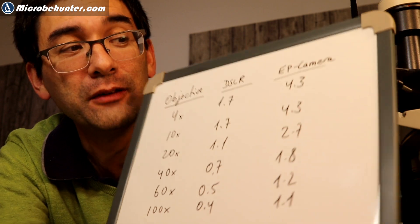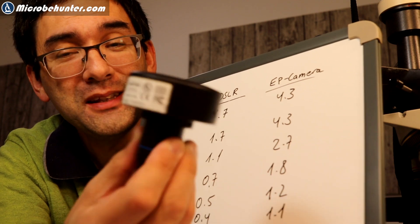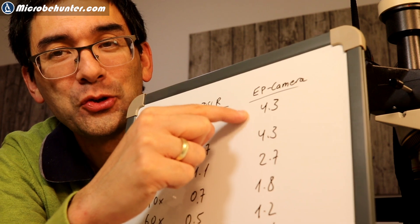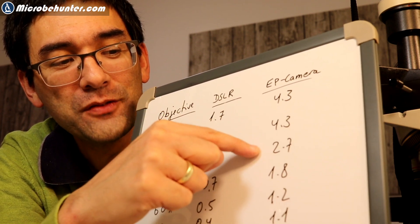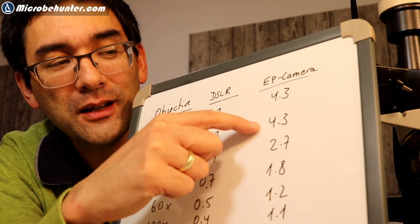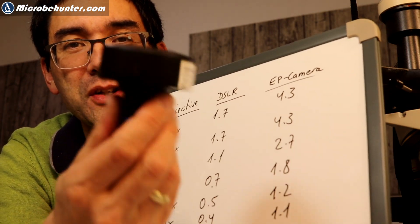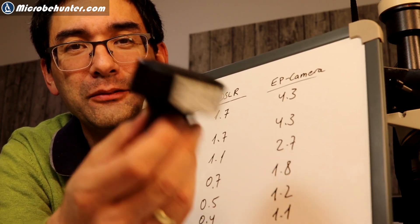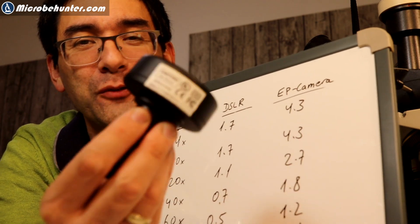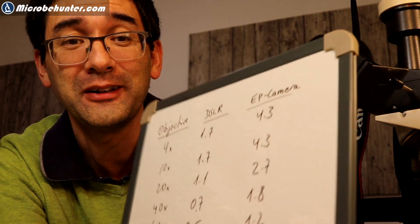But here, the eyepiece camera, this is a 3.1 megapixel camera. So this means that this camera here actually is not able to catch the image resolution of those two objectives. And it works fine for those down here. That's less than what my camera has. And this one is what it would require more. So this actually shows that it was a good idea to actually replace this camera here with my DSLR because actually this camera is not able to capture the full image resolution of the microscope, at least for those two objectives here.